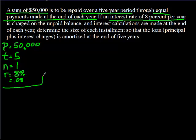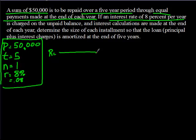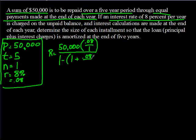Now we start filling everything into our formula. We have R equals: in the numerator, $50,000 times r over n, which is 0.08 over 1. The denominator is 1 minus the quantity of 1 plus 0.08 over 1, raised to the negative n times t power, where n is 1 and t is 5. For these problems, the best way is to take it piece by piece — don't try to do too much at once.